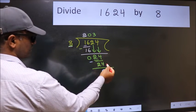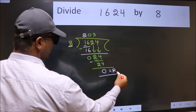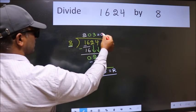No more numbers to bring it down. So, we stop here. This is our remainder and this is our quotient.